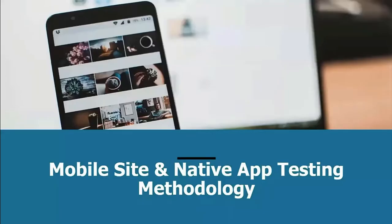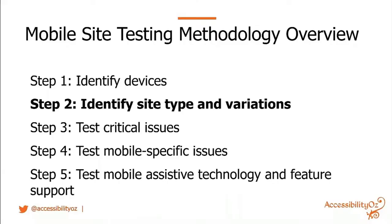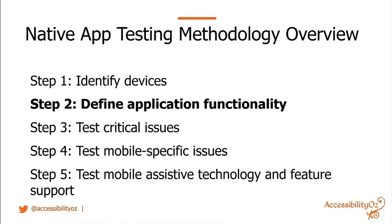The mobile site and native app methodologies are very similar except for step two. There are five steps: Step 1 is identify devices; Step 2 for mobile site is identify site type and variations; Step 3 is test critical issues; Step 4 is test mobile specific issues; Step 5 is test mobile assistive technology and feature support. For native apps, Step 2 is define application functionality.